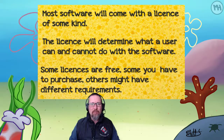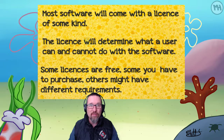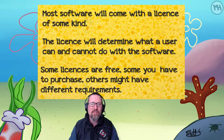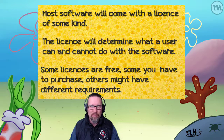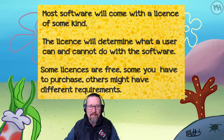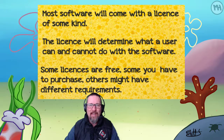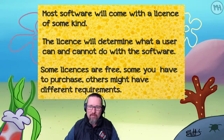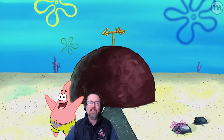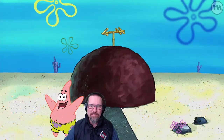Some licenses are free — you'll find open source software comes with a free license, just to indicate they won't be responsible if something goes wrong with your computer. But other licenses you have to purchase, and others might have different requirements altogether. Let's have a look at what kinds of licenses we have.